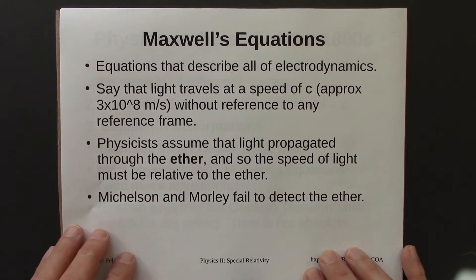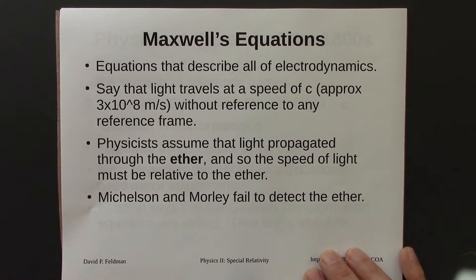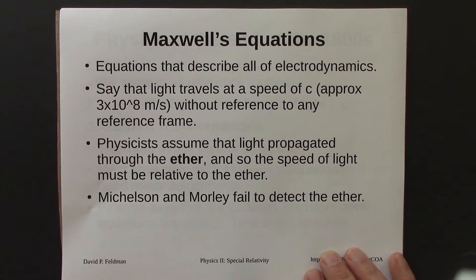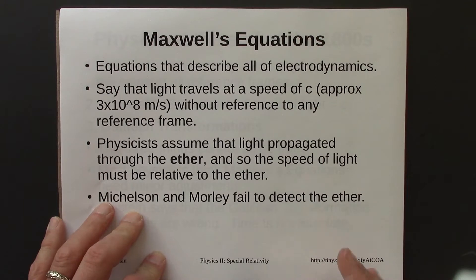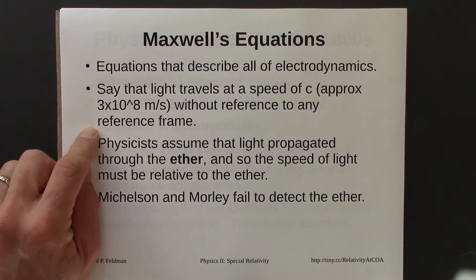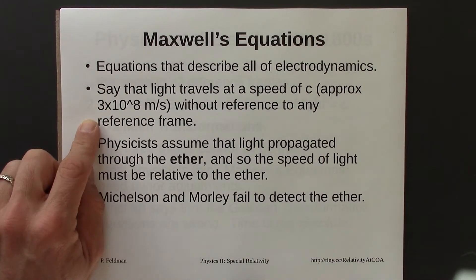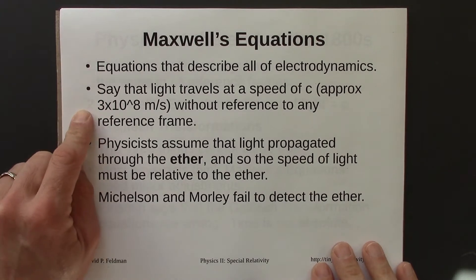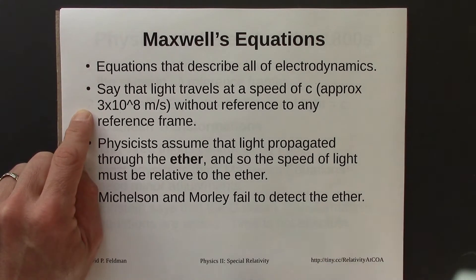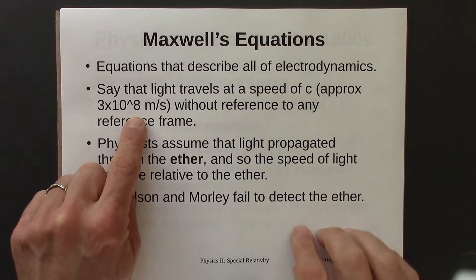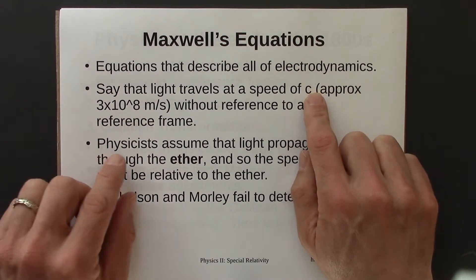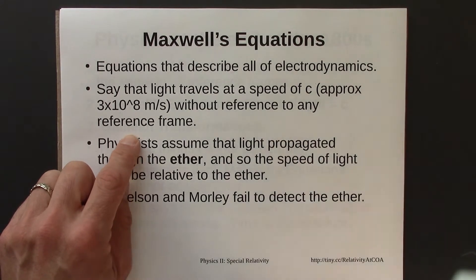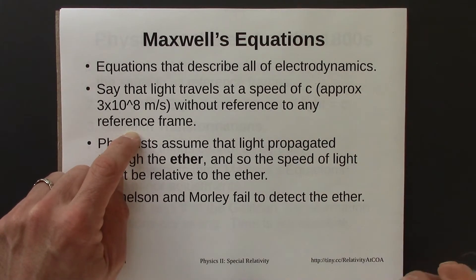We started by looking at Maxwell's equations. These are equations that describe all of electrodynamics, put forth by Maxwell around 1860–1865. One of the consequences of Maxwell's equations is a prediction that light travels at a speed c, around 3 times 10 to the 8 meters per second. This speed is given in the equations without reference to any reference frame — the speed of light is just the speed of light.